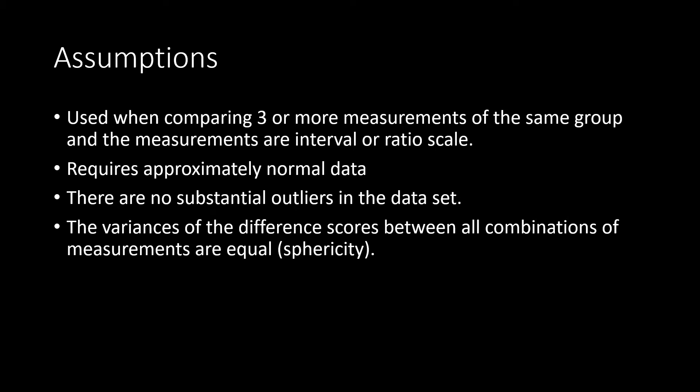Like all tests, there are a list of assumptions that need to be met before conducting a one-way repeated measures ANOVA. These include: comparing three or more measurements of the same group, and those measurements must be interval or ratio scale; all data needs to be approximately normally distributed; there needs to be no substantial outliers; and the variance of the different scores between all combinations of measurements must be equal — this is also known as sphericity.